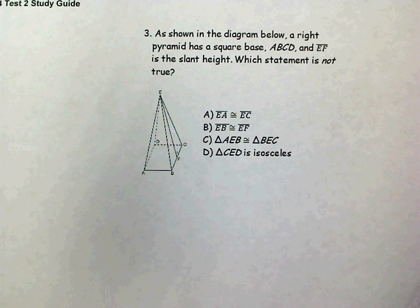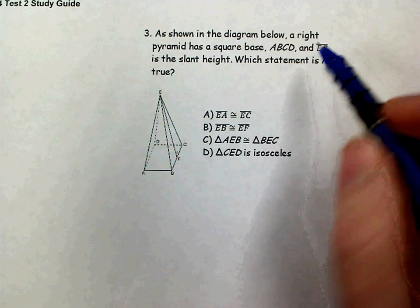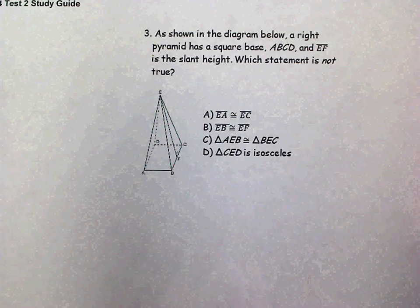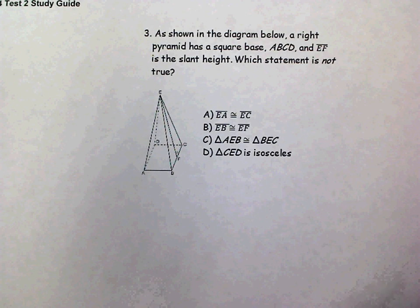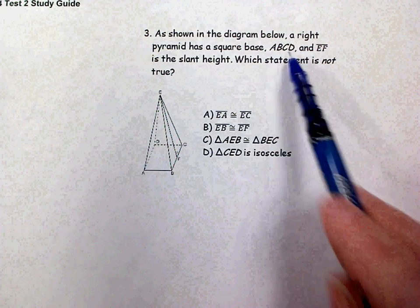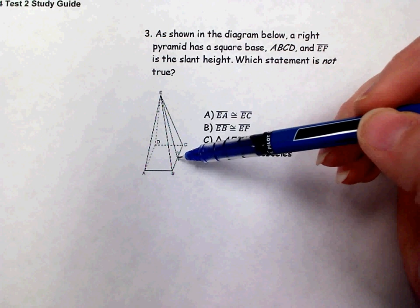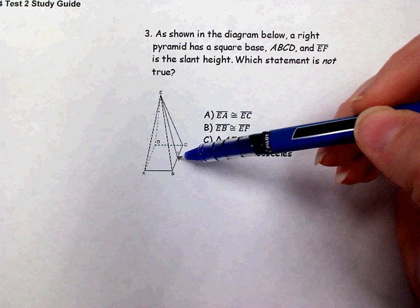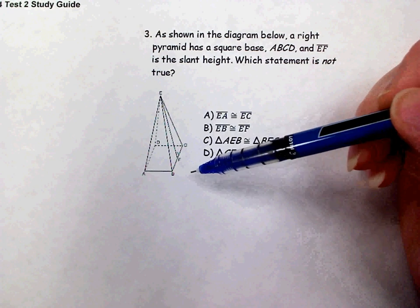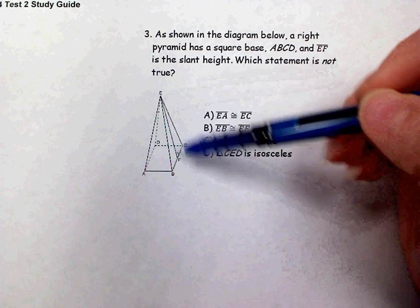On number three you have a right pyramid that has a square base, so that would be a square pyramid. The base is ABCD and segment EF from the apex to the midpoint of this side and creating that perpendicular relationship would be the slant height.